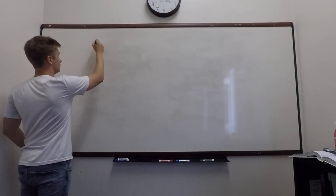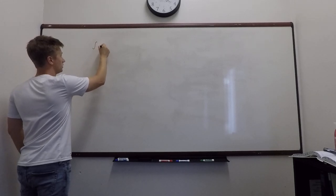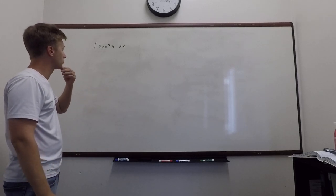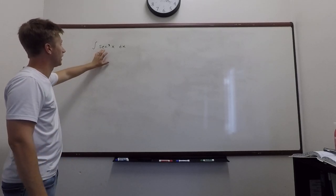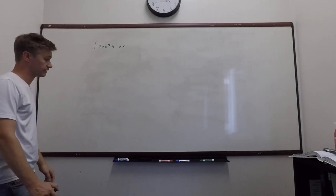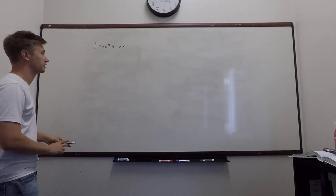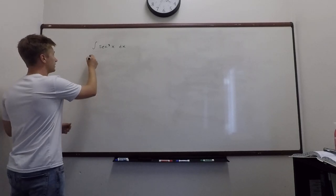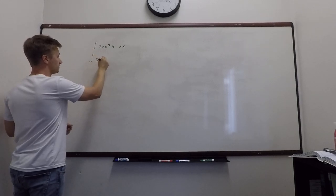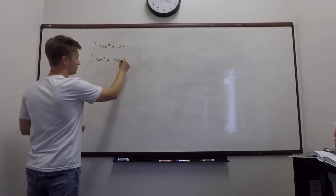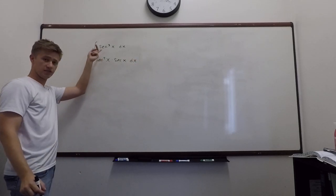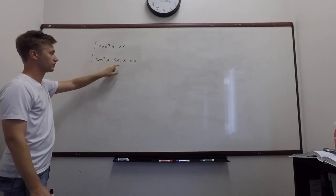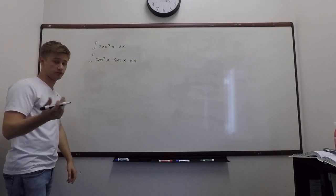Here's a fun integral — the integral of secant cubed x. This is a good one. So where do you start? With secant cubed, you probably would never guess to do this, but what we need to do is write this as the integral of secant squared times secant. We're going to break up the cube into a secant squared and a secant, and now we have a product of two functions, so you should try integration by parts.